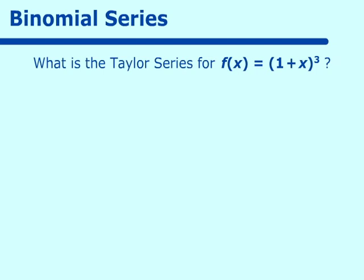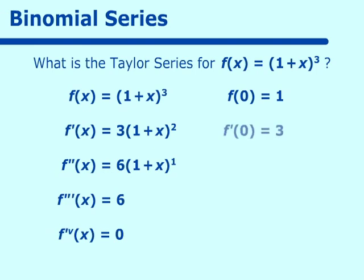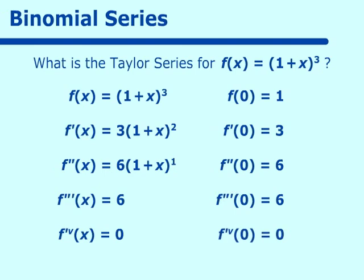What happens with the binomial series? If f of x equals (1 plus x) cubed, then f prime of x equals 3 times (1 plus x) squared, f double prime of x equals 6 times (1 plus x), and f triple prime of x equals 6. The fourth derivative, f to the fourth prime of x, equals 0. Centered around 0: f of 0 equals 1, f prime of 0 equals 3, f double prime of 0 equals 6, f triple prime of 0 equals 6, and the fourth derivative at 0 is 0.